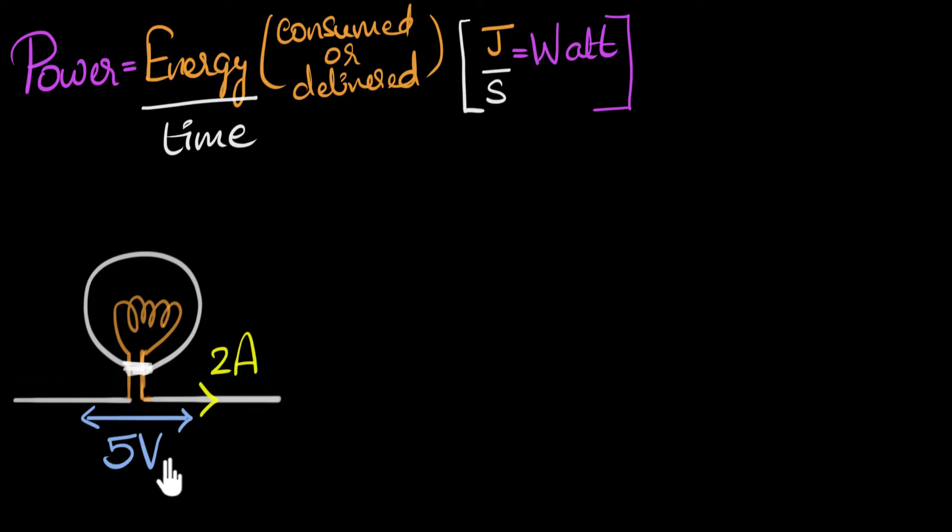To do that, we'll first recall what current and voltage means. Two amperes means two coulombs per second. This means, through any point in the circuit, two coulombs of charge are passing by every second. Two coulombs per second.